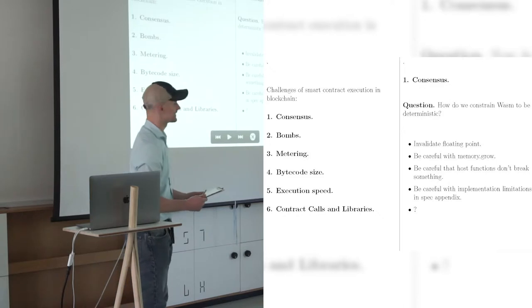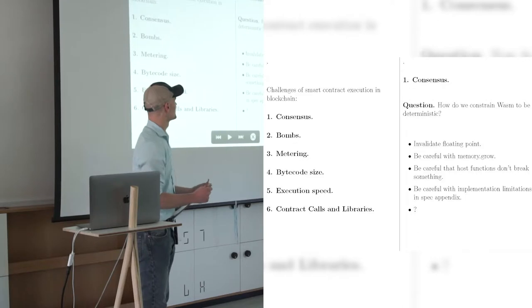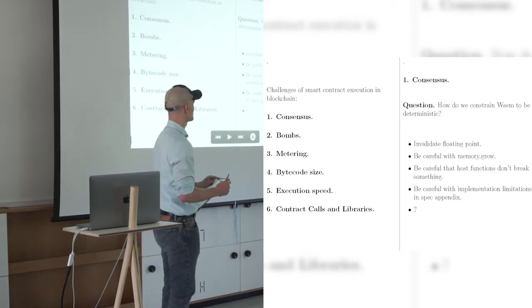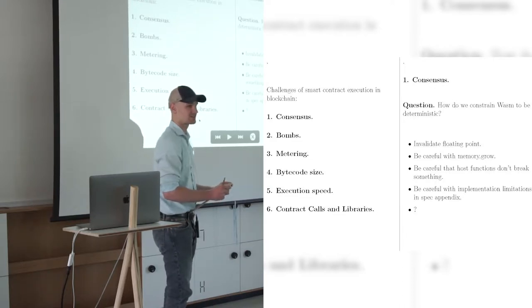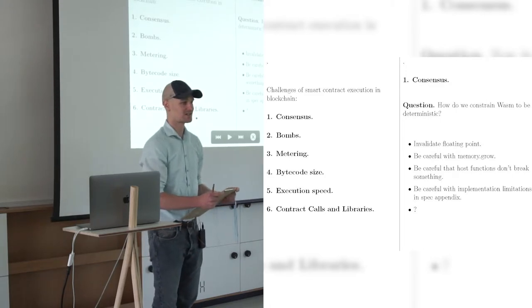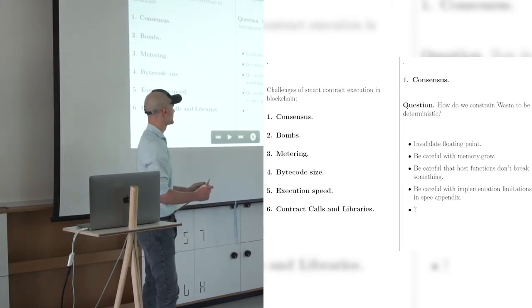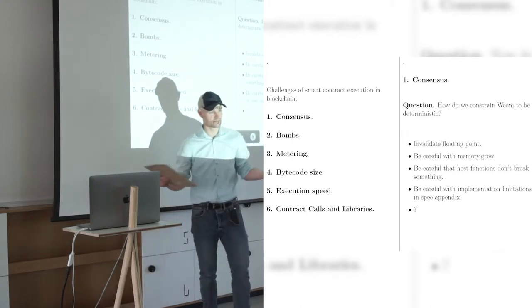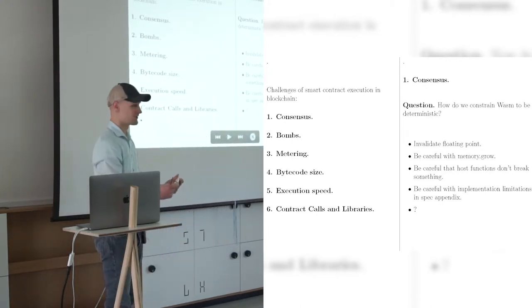Of course, we need consensus. Every execution has to, everyone has to agree on the result. So how do we constrain WASM to be deterministic? Someone will start talking about floating points, memory grow. Someone's going to talk about host functions, maybe breaking something. We don't have guarantees. The spec, the proofs for WebAssembly don't apply to host functions.